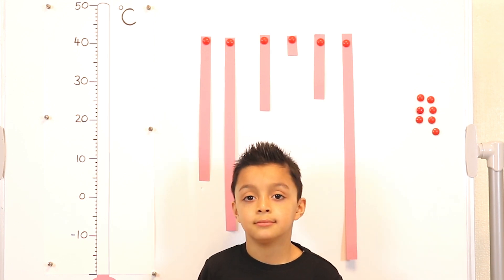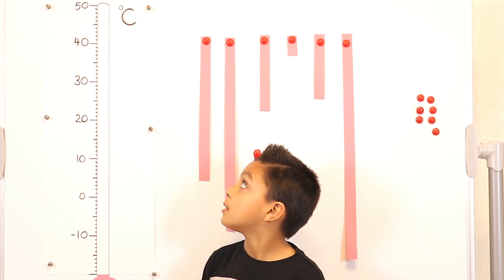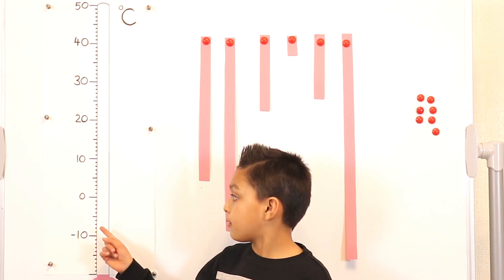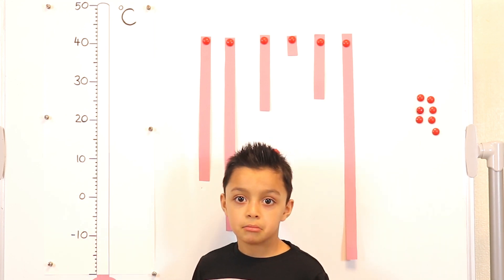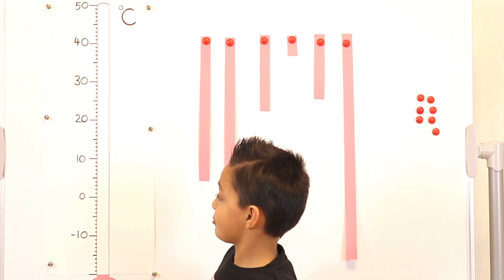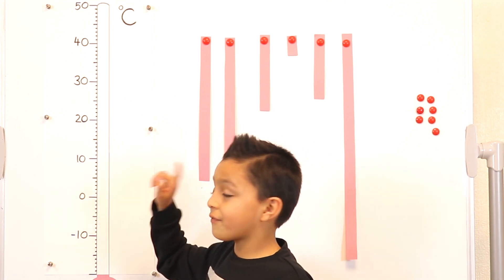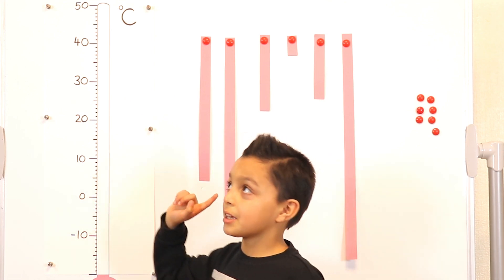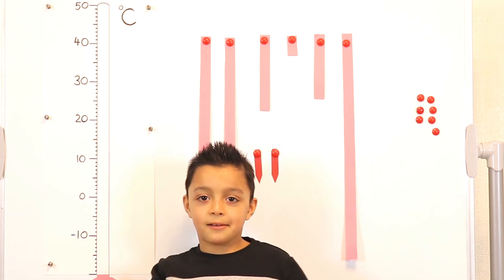So the first thing we're going to do is we're going to measure some temperatures. And that means there are more of these. There's fifty from zero to fifty, but we have some underneath — fifty plus twenty, seventy.